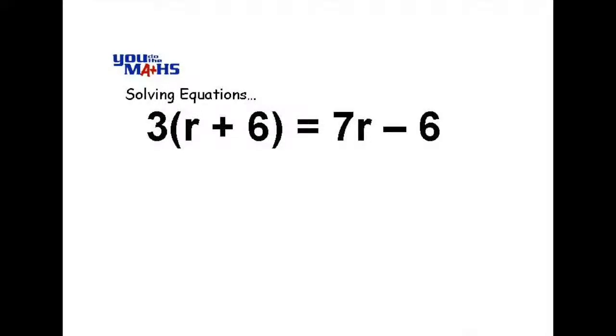In this problem we've got brackets and we've also got an R on both sides of the equation. What we need to do first of all is expand the brackets on the left hand side. So if we multiply the 3 by the R plus 6 we get 3R plus 18 is equal to 7R minus 6.